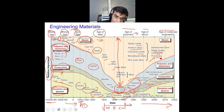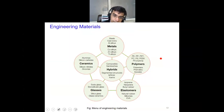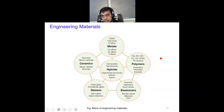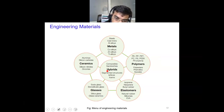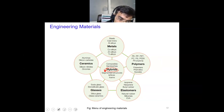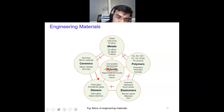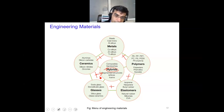Now we move to the modern classification of engineering materials. Today, we classify materials into six categories, which includes traditional categories like metals, polymers, ceramics, glasses, and elastomers, and we have a new category called hybrids. Hybrids are materials formed by combining two or more of these categories. Hybrid materials generally have very different properties than their constituent counterparts, and we will discuss more about them in subsequent slides.